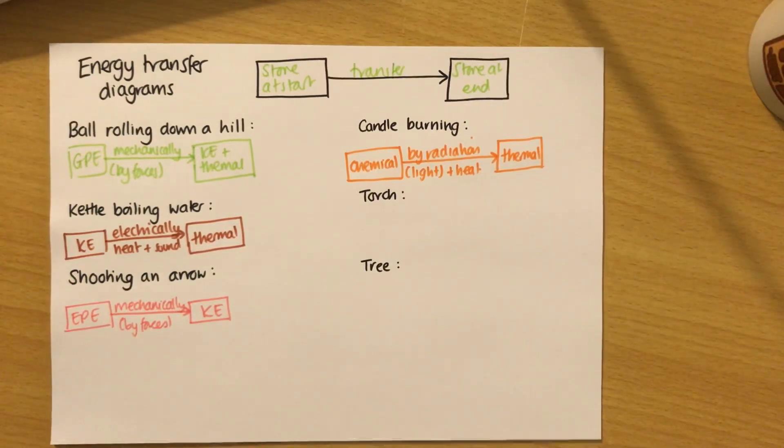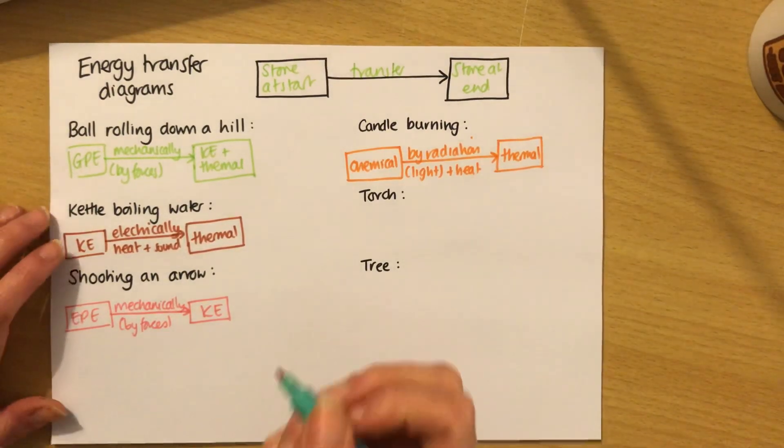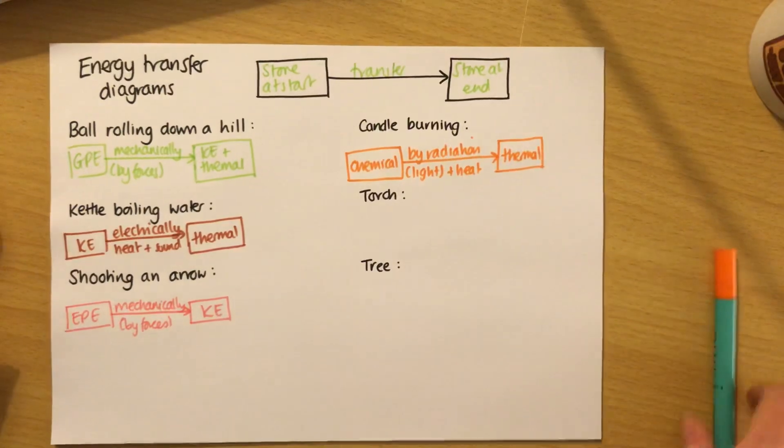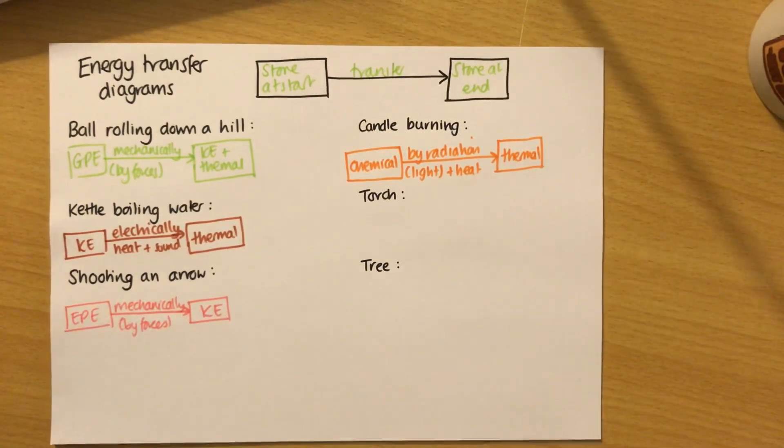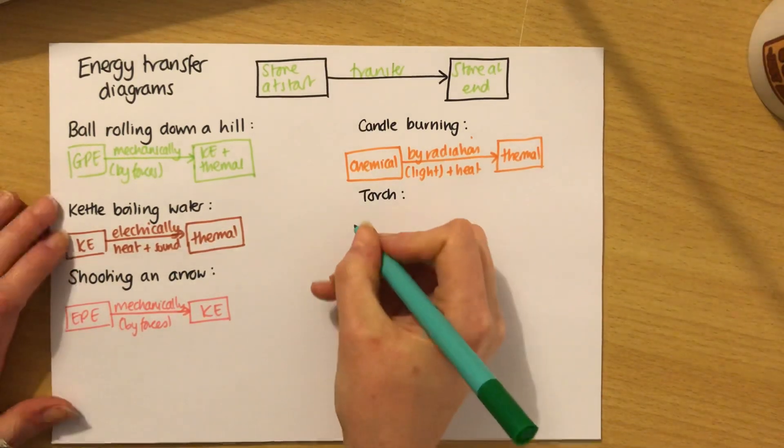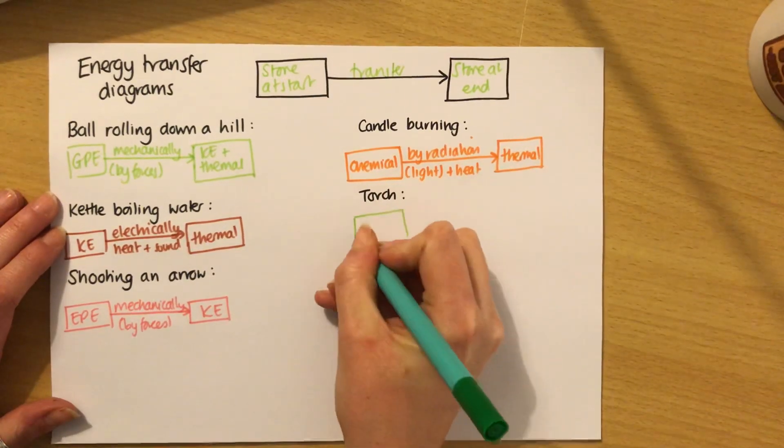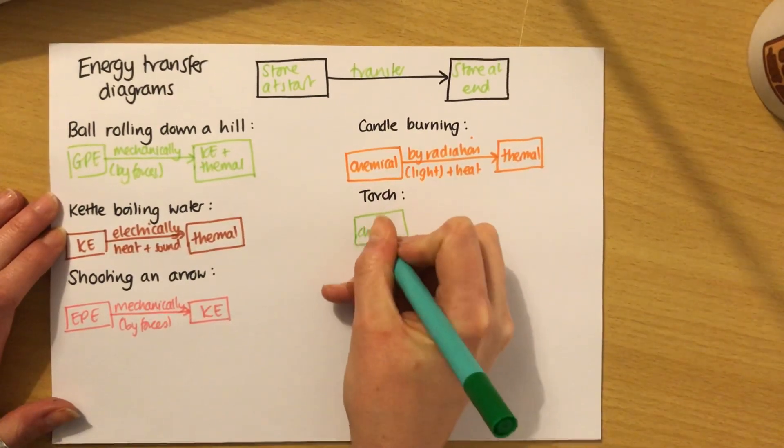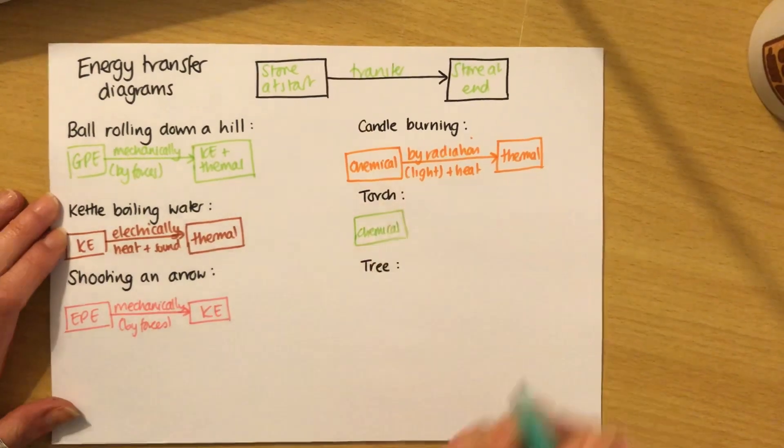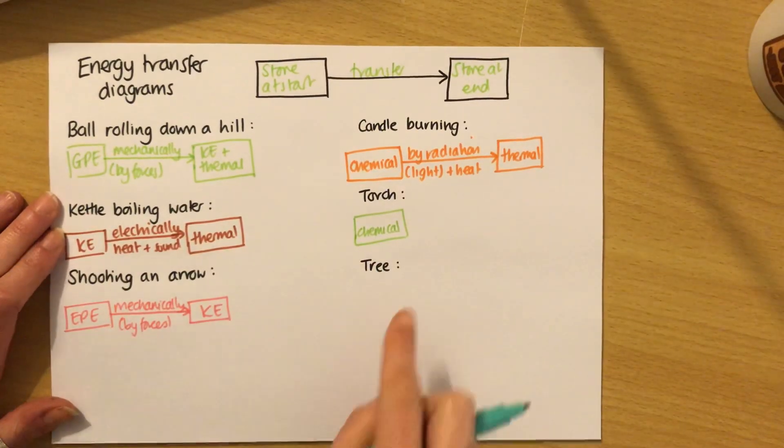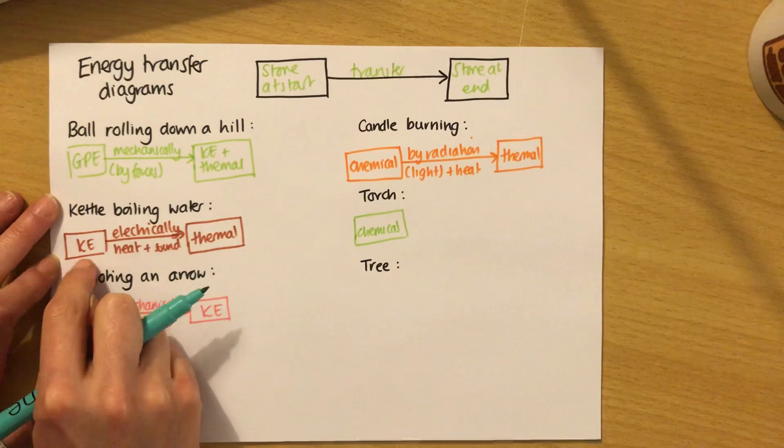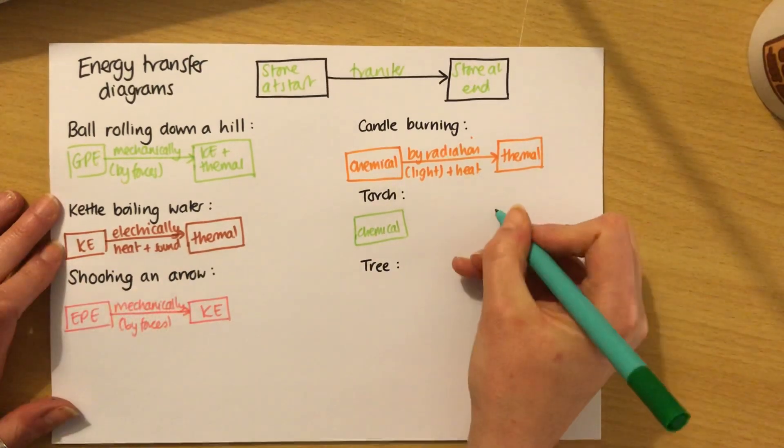Now a torch you'd think is quite similar, and it is to be fair. A torch, I'm going to consider that it's battery powered. Anything that's got a battery is chemically stored, storing energy, because batteries basically have chemical reactions that make the electrical circuit work. So I'm going to start with chemical. That's a good tip. Anytime it's battery, it starts with chemical. Anytime it's the mains electricity, it starts with KE.